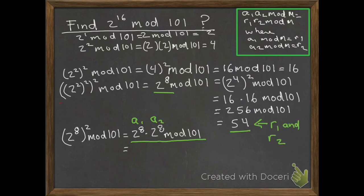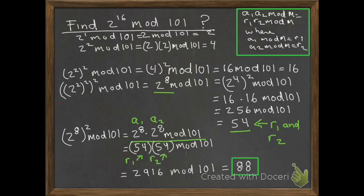We replace 2^8 times 2^8 mod 101 with 54 times 54 mod 101. We calculate that out and get 88.